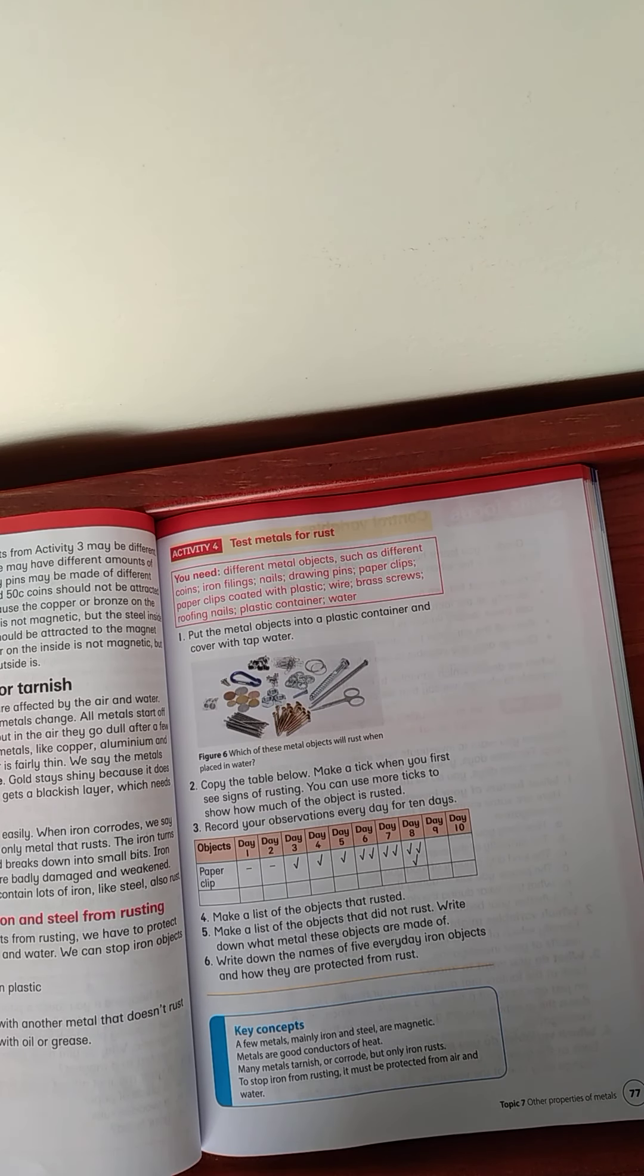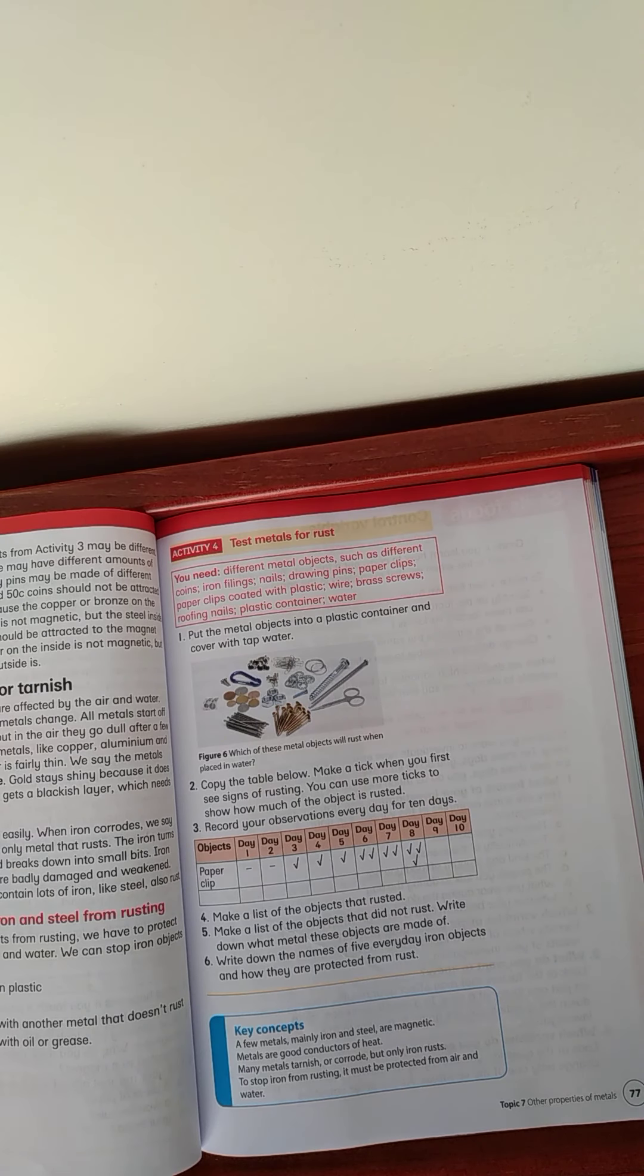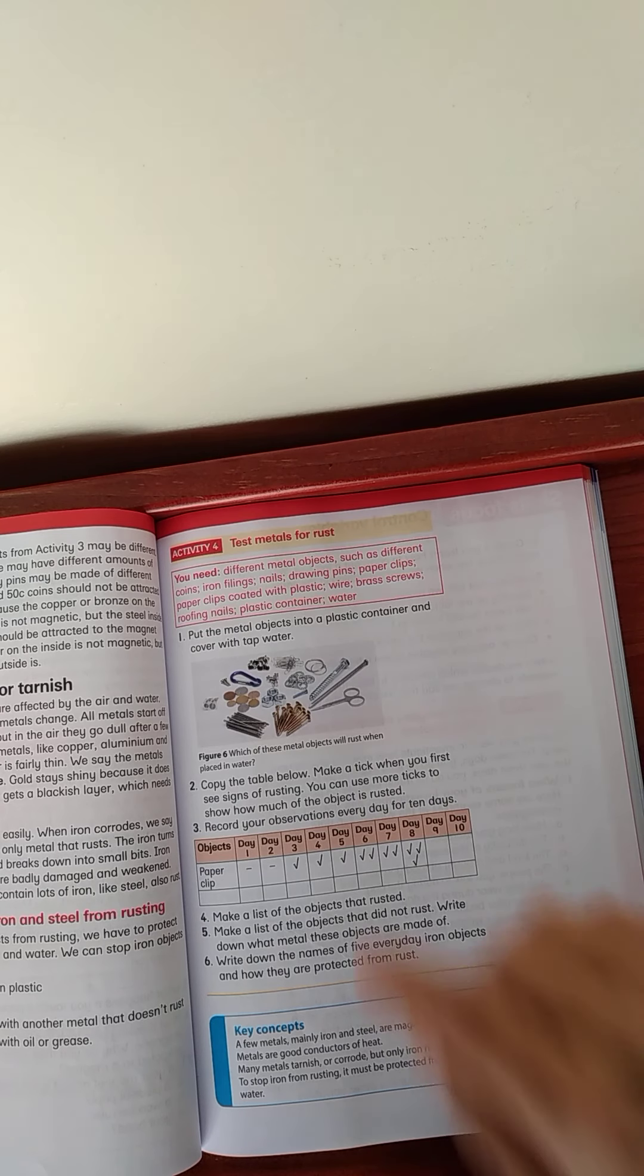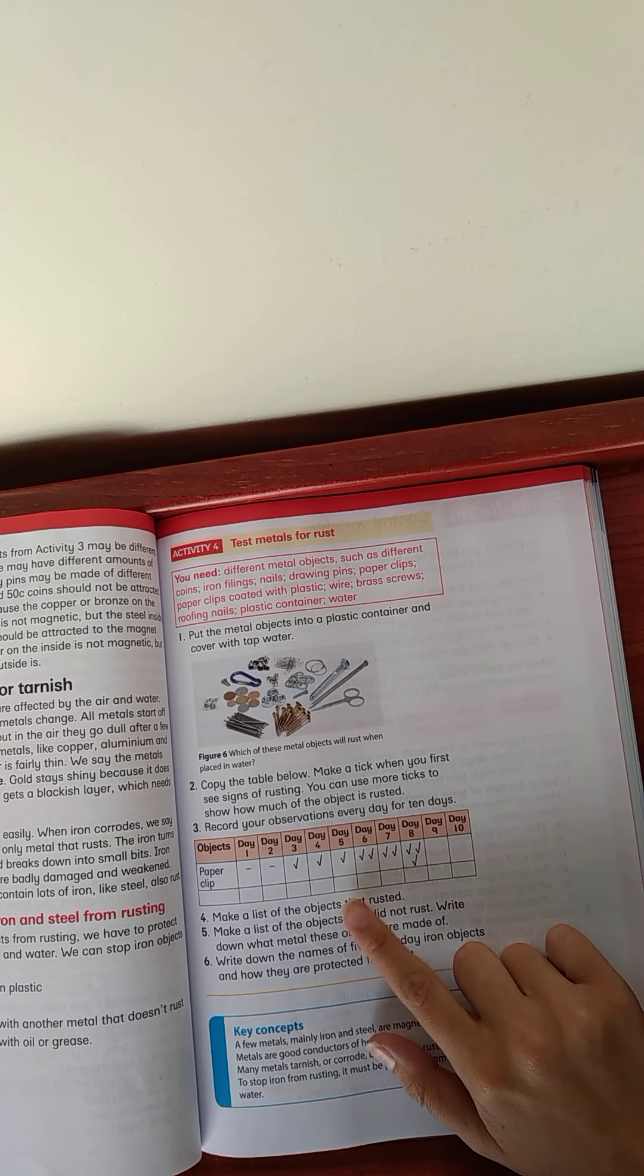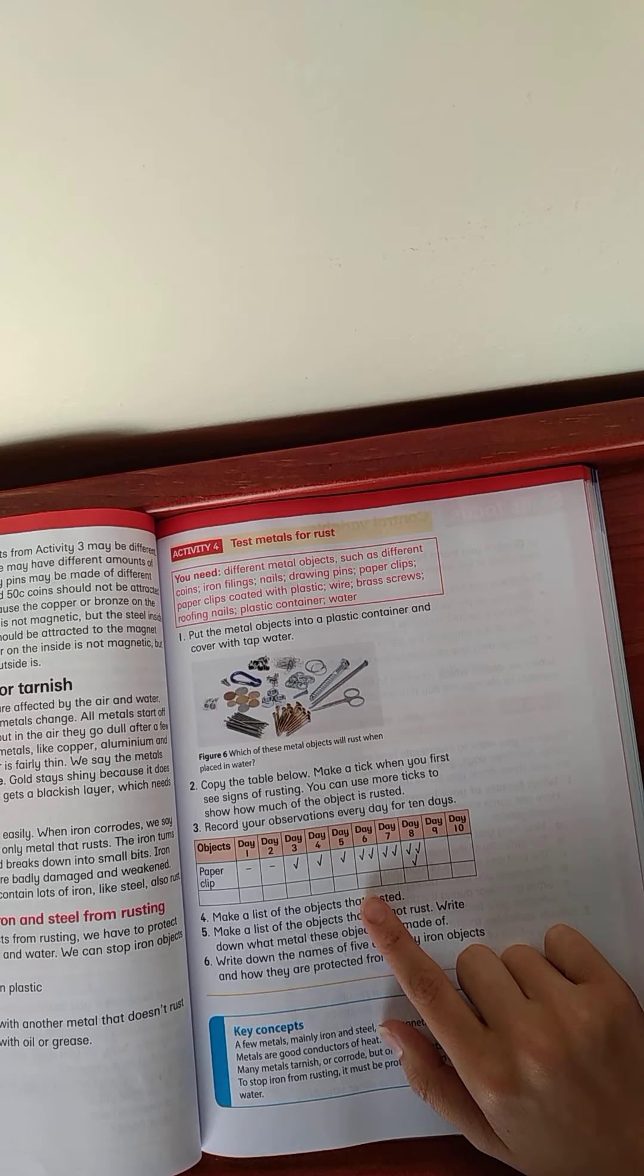You will need different metal objects such as different coins, iron filings, nails, drawing pins, paper clips, paper clips coated with plastic, wire, brass screws, roofing tiles, plastic containers, and water. So, put the metal objects in the plastic container and cover with tap water. Copy the table below. You don't have to do that because it will be in your book. And then, make a tick when you first see signs of rusting. You can use more ticks to show how much of the object is rusted. So, is it more rusted than it was the previous day? So, try and do this activity as best as you can.